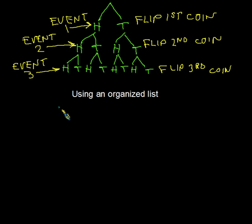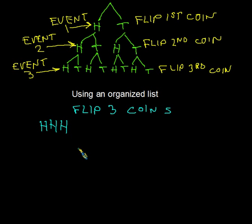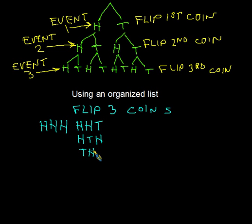In an organized list, if we're going to flip three coins, one possible outcome is heads, heads, heads. I'm going to make columns to stay organized. One column has all possibilities with three heads. There's also a possibility of two heads: heads-heads-tails, heads-tails-heads, or tails-heads-heads. I could also have just one head: heads-tails-tails, tails-heads-tails, or tails-tails-heads.